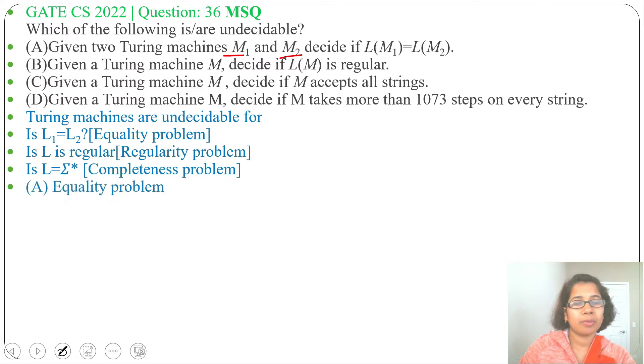Next, option B: given a Turing machine M, decide if L of M is regular. This comes under regularity problem, and Turing machines are undecidable for regularity problem.